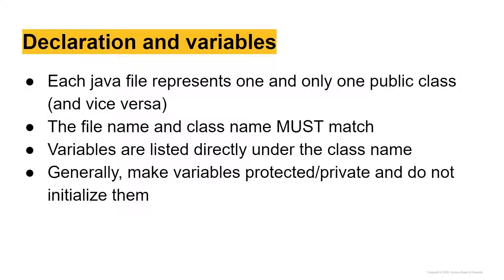Let's talk about declaration and variables. Each Java file represents one and only one public class, and vice versa — every public class gets its own Java file.